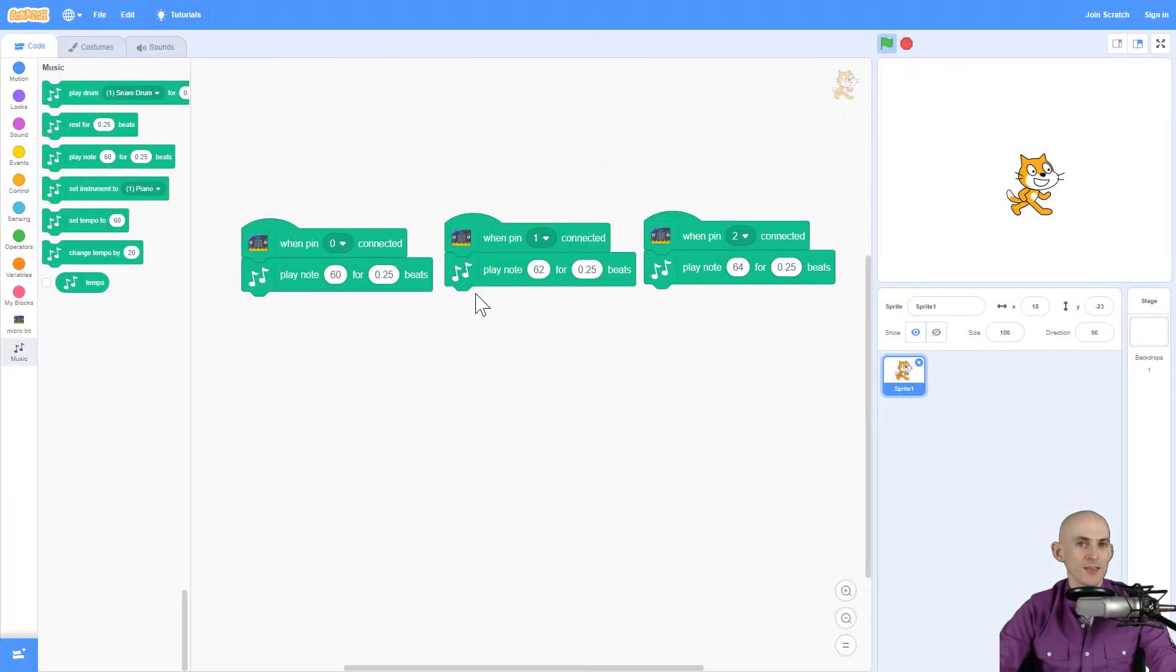All right. So that's one interesting way that you could use the micro bit to make music. However, there are a lot of really cool things that you can do using the pins. So experiment with these pin blocks when the pin is connected and have some fun, create some interesting stuff with micro bit and scratch.